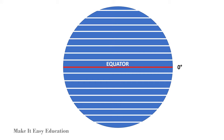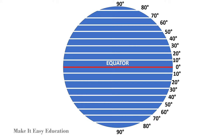The equator is located at 0 degrees latitude. The equator divides earth into the northern and southern hemisphere. From 0 degrees it increases and reaches 90 degrees at the north and south poles.